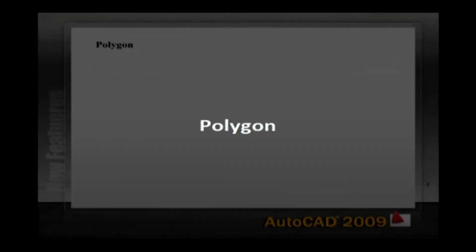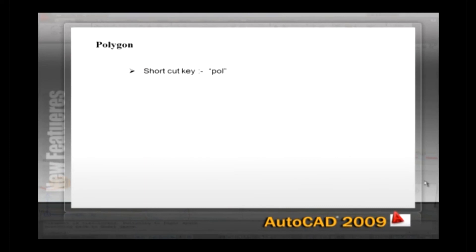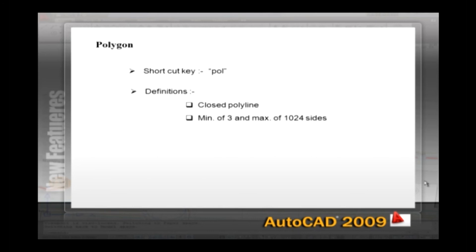Polygon. The shortcut key used on the command line is POL. Like rectangles, polygons are closed polyline objects. Unlike rectangles, by default, polygons are regular — they have equal length sides and equal internal angles. AutoCAD's Polygon command draws regular polygons with a minimum of 3 and a maximum of 1024 sides. After specifying the number of sides, there are three sub-options available to draw a polygon: Edge, Inscribed, and Circumscribed.